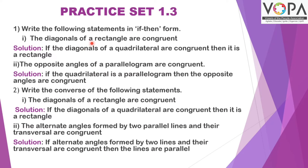Practice Set 1.3. Write the following statements in if-then form. Statement: the diagonals of a rectangle are congruent. Solution: if the diagonals of a quadrilateral are congruent, then it is a rectangle. Here, 'the diagonals of a quadrilateral are congruent' is the antecedent, and 'it is a rectangle' is the consequent.